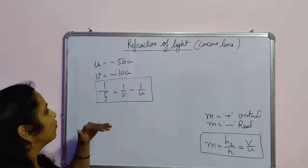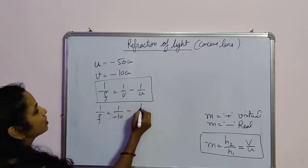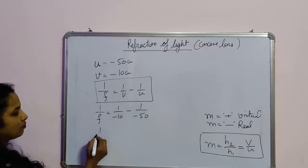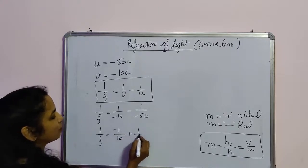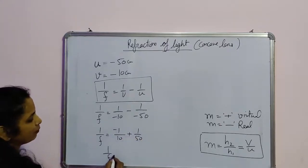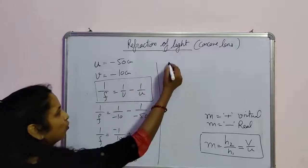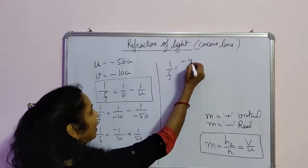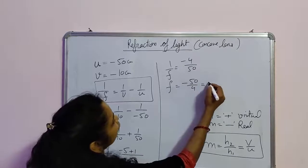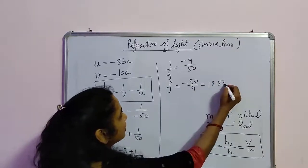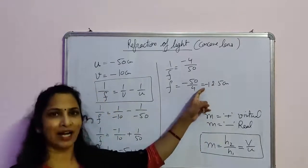This is the lens formula. Applying it: 1/f = 1/v − 1/u = 1/(−10) − 1/(−50). This gives 1/f = −1/10 + 1/50. Taking LCM of 50: 1/f = (−5 + 1)/50 = −4/50. Therefore f = −50/4, which equals −12.5 cm. The negative sign shows that this is a concave lens, because a convex lens always has a positive focal length, so a negative focal length means the lens is concave.